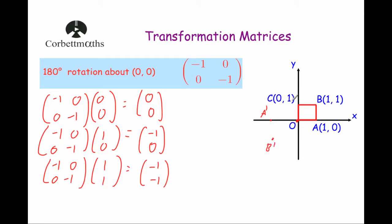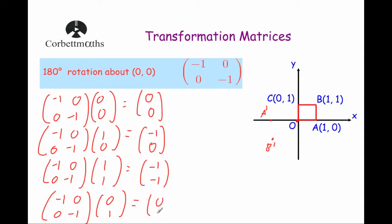And finally, the point C. When we rotate this 180 degrees about the origin, it should move to the point 0, minus 1. Let's have a look and see. We multiply the matrix minus 1, 0, 0, minus 1 by the point 0, 1. Minus 1 times 0 is 0, 0 times 1 is 0, so the x-coordinate will be 0. And then 0 times 0 is 0, minus 1 times 1 is minus 1. So it does — the point C is moved to here, the point C dash, which is the point 0, minus 1.